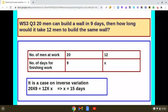So 20 men can build the wall in 9 days. Now it is being asked, how long would it take for 12 men to build the same wall? So 12 men we will assume will build the wall in x number of days.